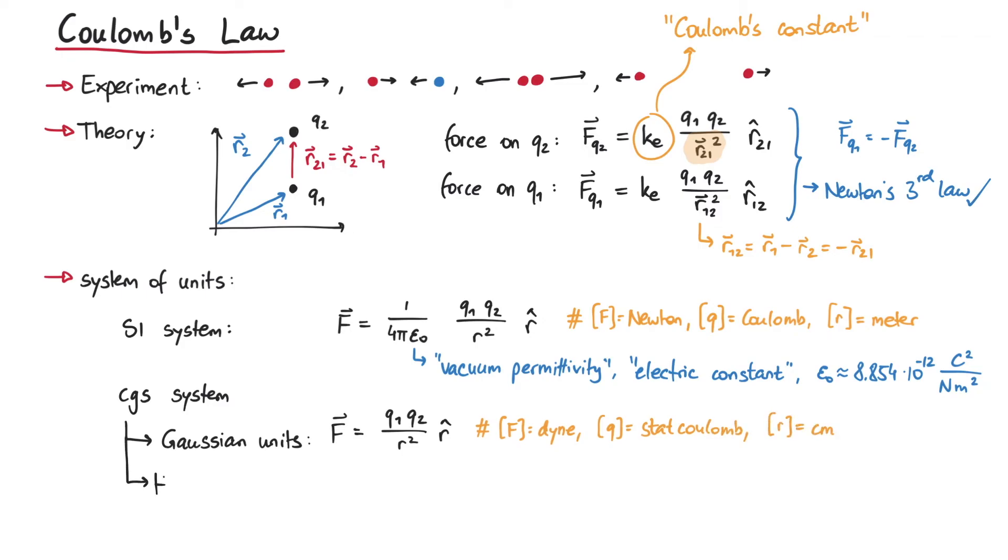The Heaviside-Lorentz system is another example of CGS units. Here, the constant ke is equal to 1 over 4 pi, and the physical quantities have the same units as in the Gaussian units. However, note that charges in the Heaviside-Lorentz system are defined as the square root of 4 pi times charges in the Gaussian system.